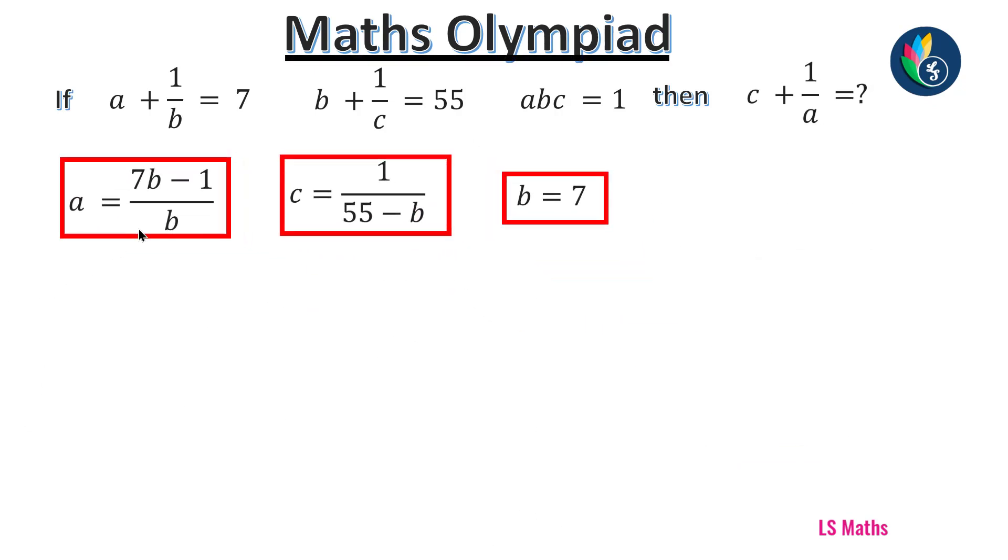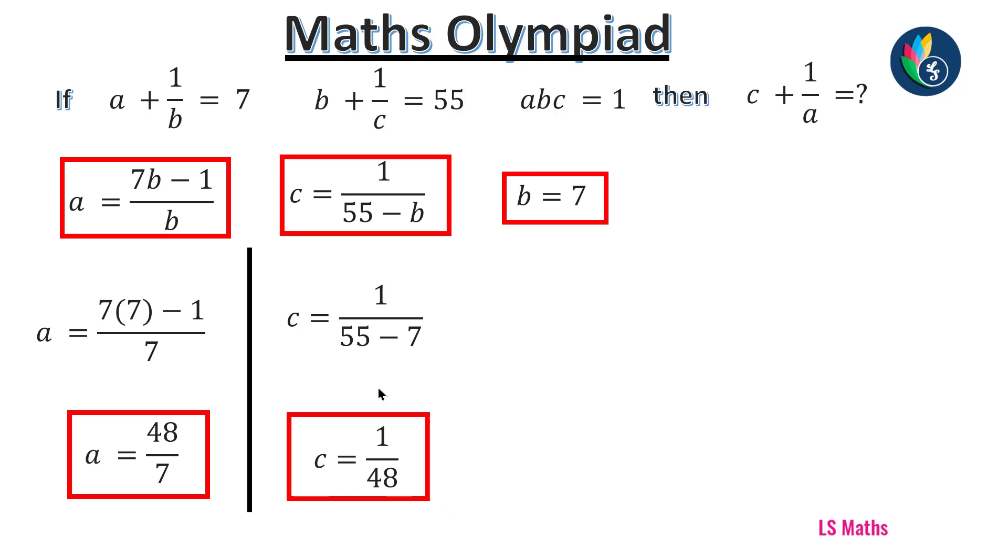Next step, we are going to substitute the value of B in A and C. First, we substitute this in A. So A equals 7 into 7 minus 1 by 7. 7 times 7 is 49, so 49 minus 1, 48 by 7. That is the value of A. Next, we substitute the value of B in C. C equals 1 by 55 minus 7. So C is 1 by 48.